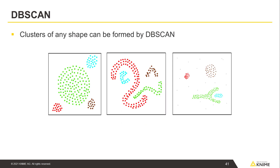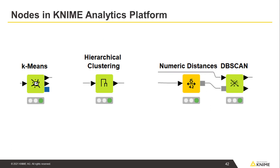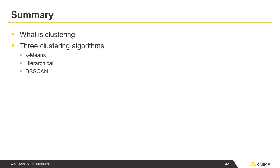Clusters of any shape can be formed by the DBSCAN algorithm. The three clustering algorithms — K-Means, Hierarchical Clustering, and DBSCAN — are available in the KNIME Analytics Platform as K-Means, Hierarchical Clustering, and DBSCAN nodes, respectively. These nodes run the clustering algorithm and assign cluster labels to data points. In this video, we have shown what clustering is, and then we have shown three examples of clustering algorithms: K-Means, Hierarchical, and DBSCAN.